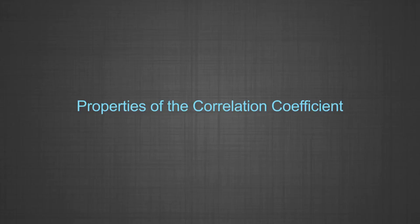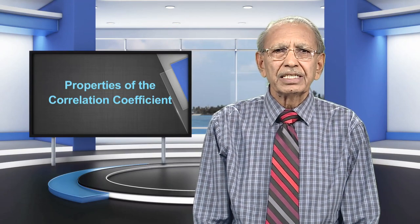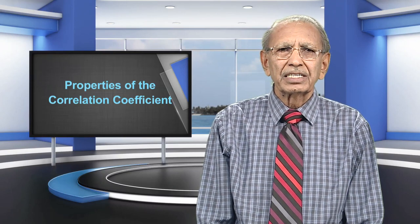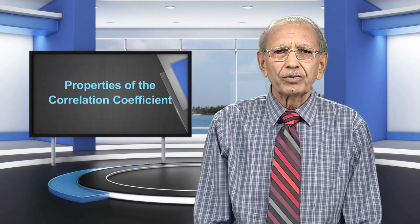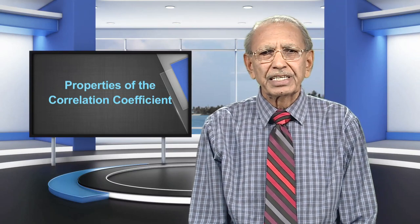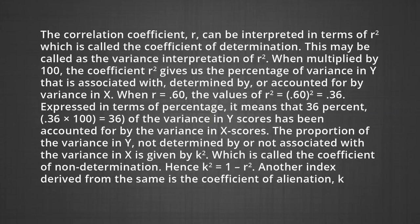We are now going to discuss the properties of the correlation coefficient. One property is the range of R. The correlation coefficient may assume values from minus 1 through 0 to plus 1, which is inherent in the formula propounded by Pearson. Values of R equal to minus 1 and plus 1 represent cases of perfect relationship, though the direction is negative in the first case and positive in the latter. The value of R can never be greater than plus 1 or less than minus 1. The correlation coefficient R can be interpreted in terms of R², called the coefficient of determination.